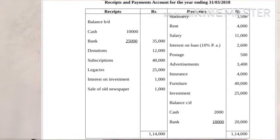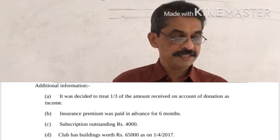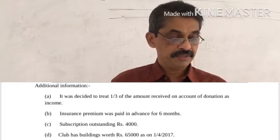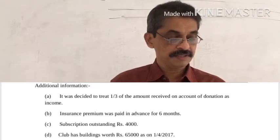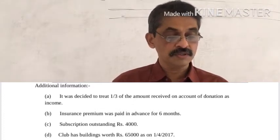On the payment side: rent is 4,000, salary is 11,000, interest on loan is 10% per annum amounting to 2,600, postage 500, advertisements 3,400, insurance 4,000, furniture 40,000, investment 25,000. The closing balance carried forward is cash 2,000 and bank 18,000. The adjustment states that one-third of the amount received on account of donation should be treated as income. Insurance premium was paid in advance for six months. Subscription outstanding is Rs. 4,000. The club has a building worth Rs. 65,000 as on 1st April 2017.